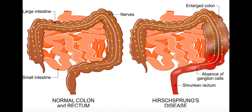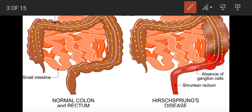In this image you are seeing: in the first picture you are seeing the normal colon and rectum, and in the second you are seeing enlarged colon, absence of ganglion cells in the sigmoid part of colon, and a shrunken rectum.